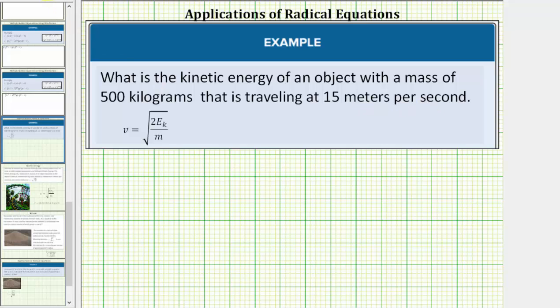So the given information is that the mass m equals 500 kilograms and the velocity v equals 15 meters per second. And we're asked to determine the kinetic energy which means we need to solve the equation for E sub k.